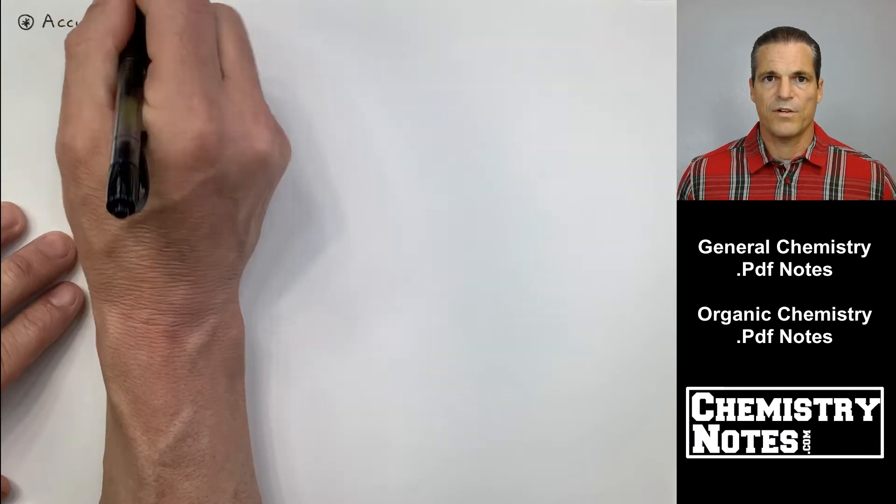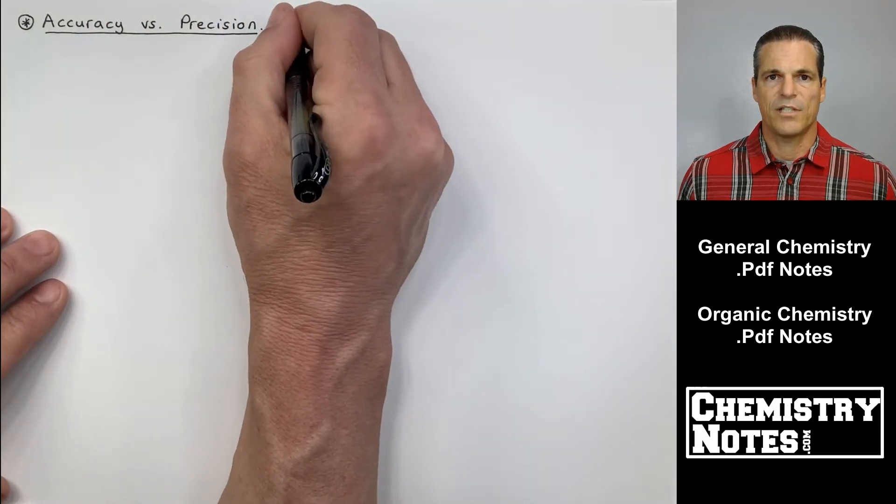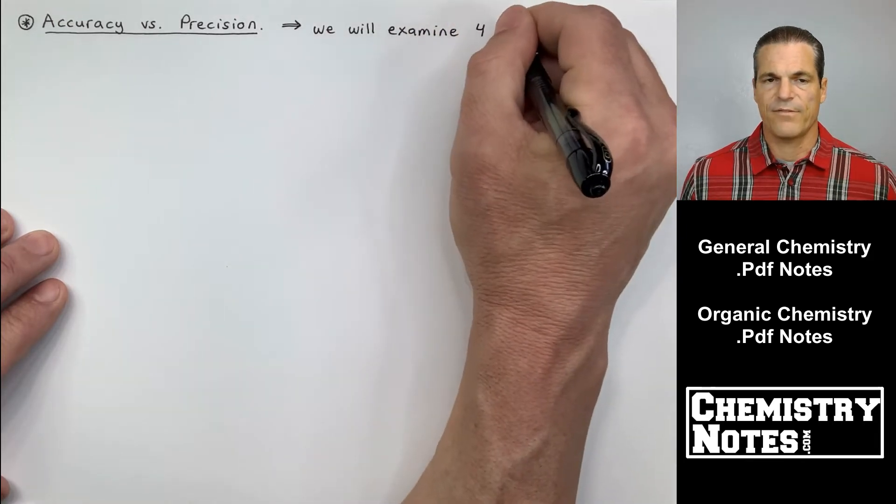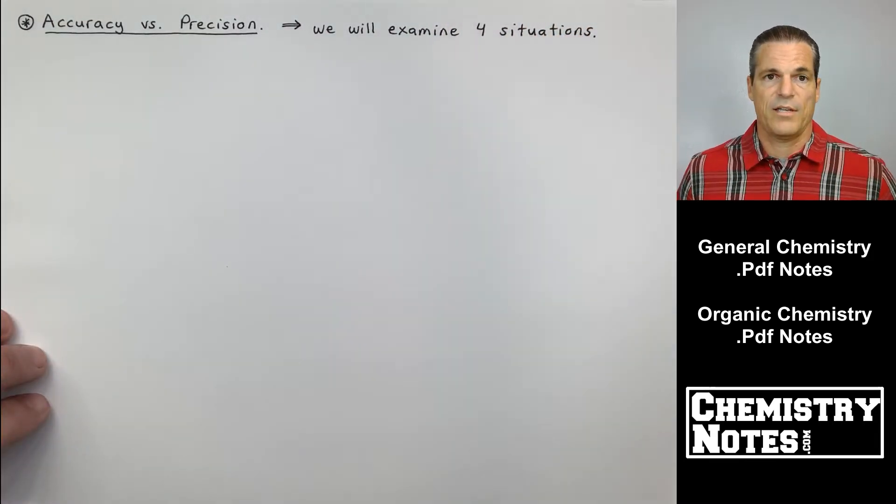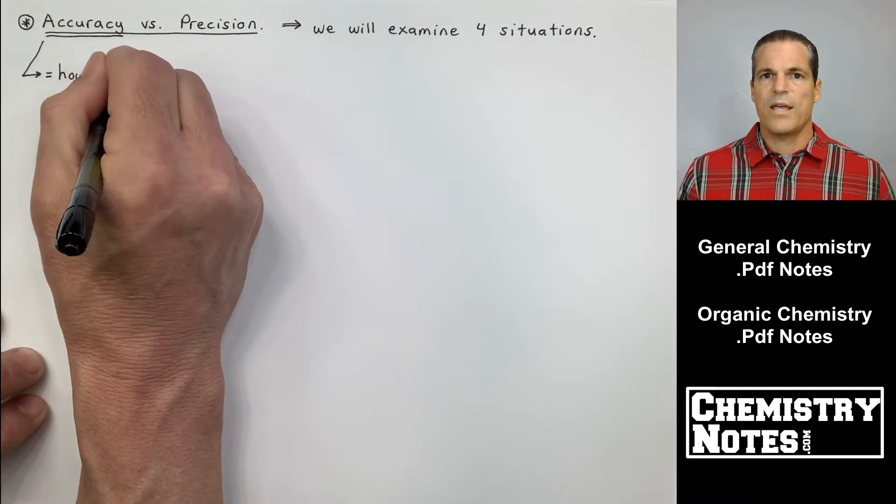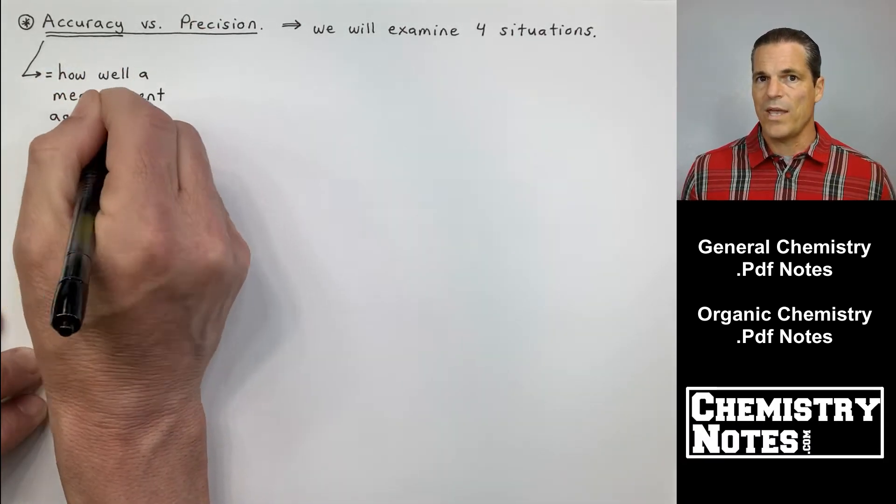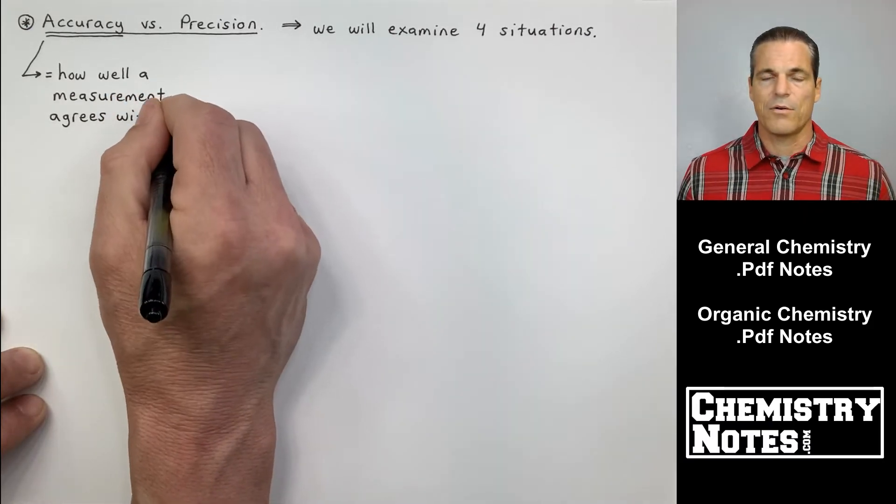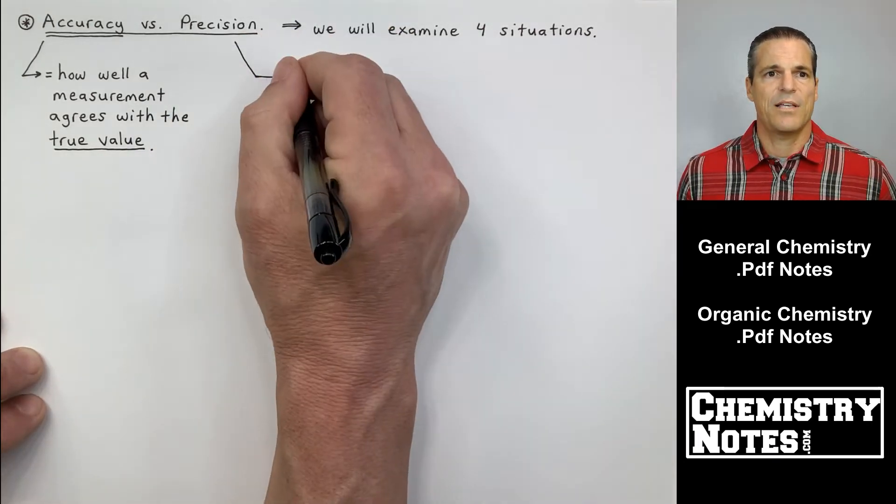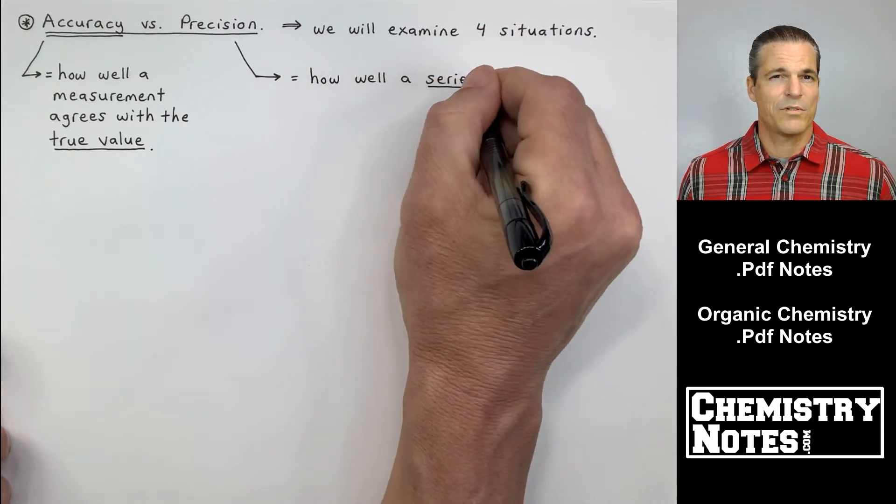At the top of page 2 of our notes, we're moving on to the second topic of this video: accuracy versus precision. Now, in non-chemistry class life, accuracy and precision are thrown around in everyday life kind of like they mean the same thing, very similar to the way mass and weight is thrown around as if it's the same thing. Accuracy and precision are actually different. So accuracy is defined as how well a measurement agrees with the true value.